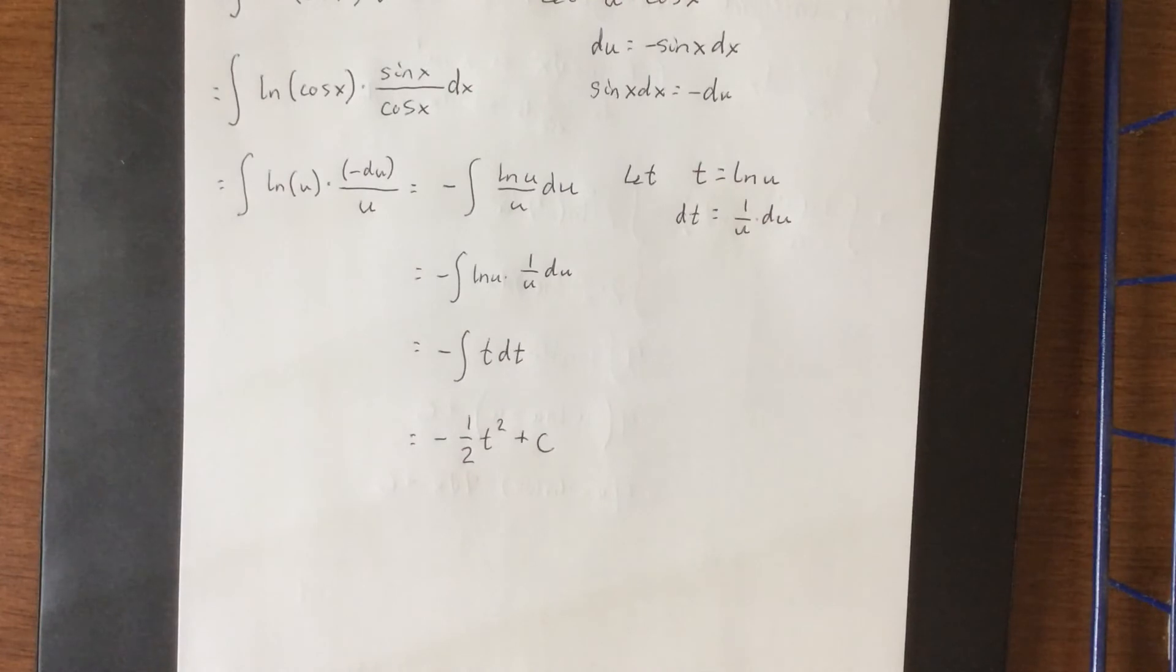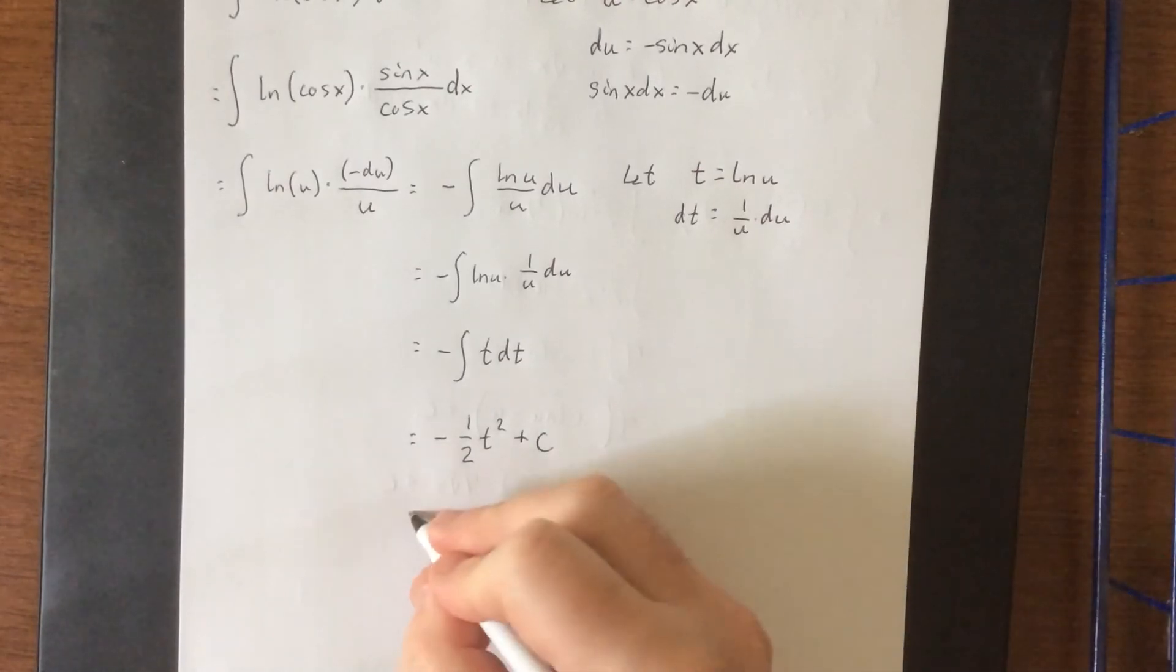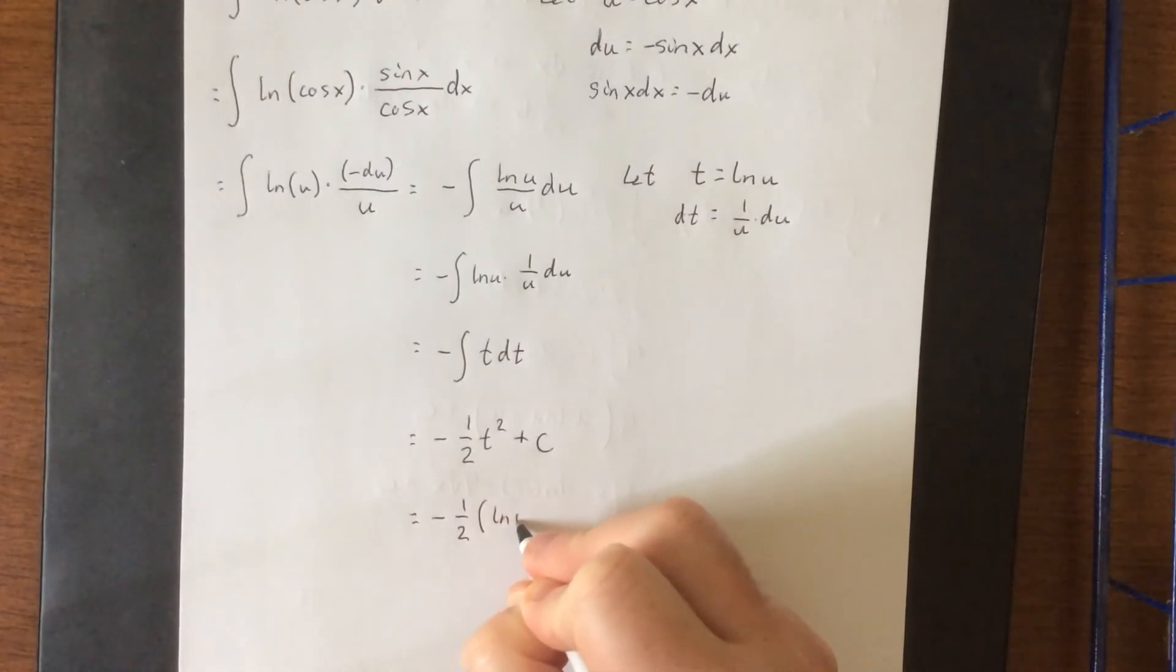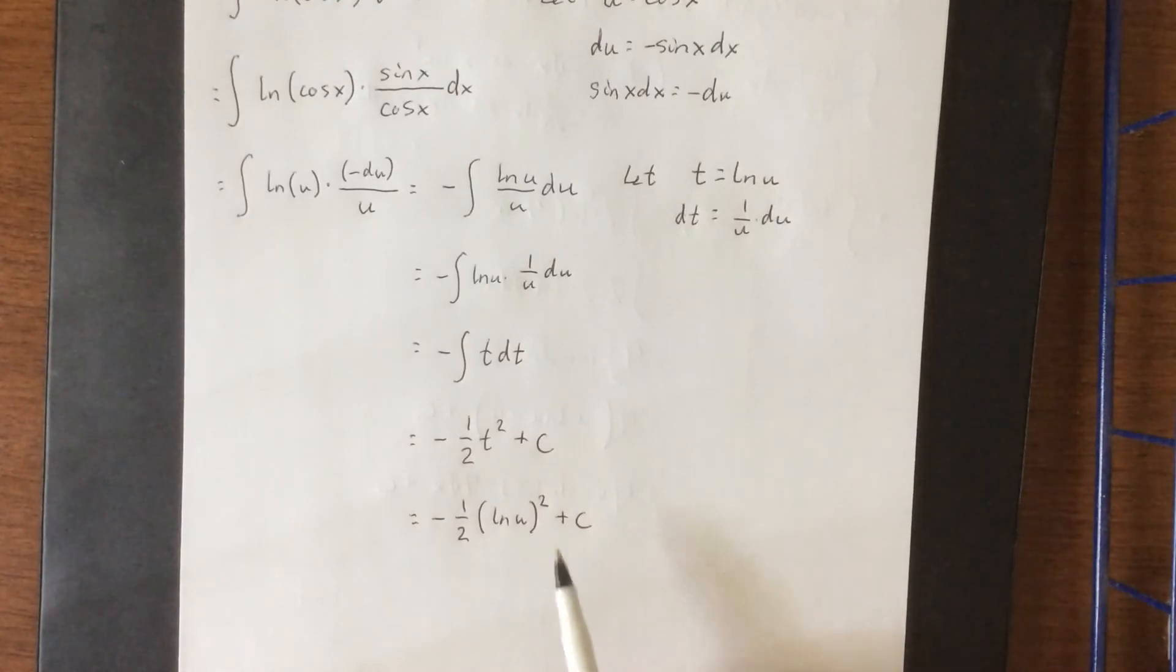Now with that in mind, we need to substitute back. t was equal to the natural log of u. So this will be negative 1 half times the natural log of u, quantity squared plus c. This is not a situation where this power comes down front, because it's not the argument that's being squared. It's the actual logarithm that's being squared.